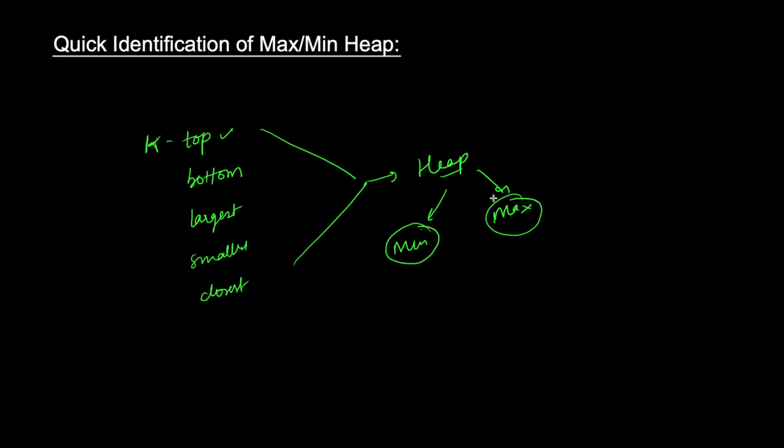Min heap and max heap are used in opposite cases. What I mean is, if you're given top values, largest values, greatest values, farthest values, or best values - the top, largest, greatest, farthest, or maximum values.